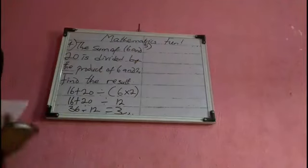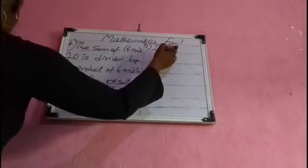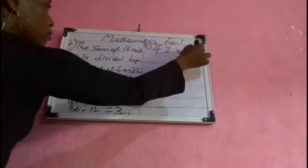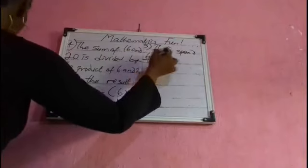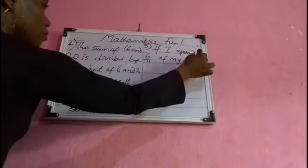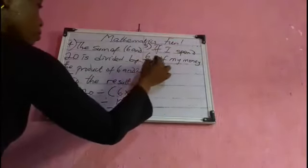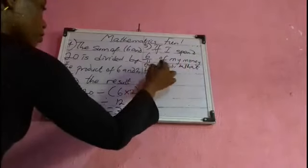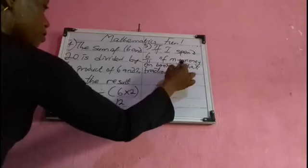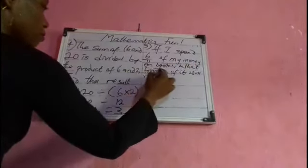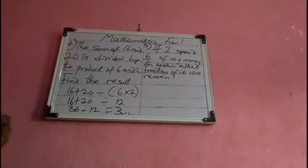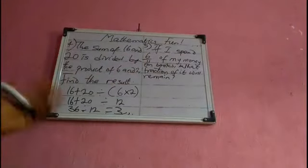Number five: if I spend 6 over 11 of my money on books, what fraction of it will remain? This is a fraction question.